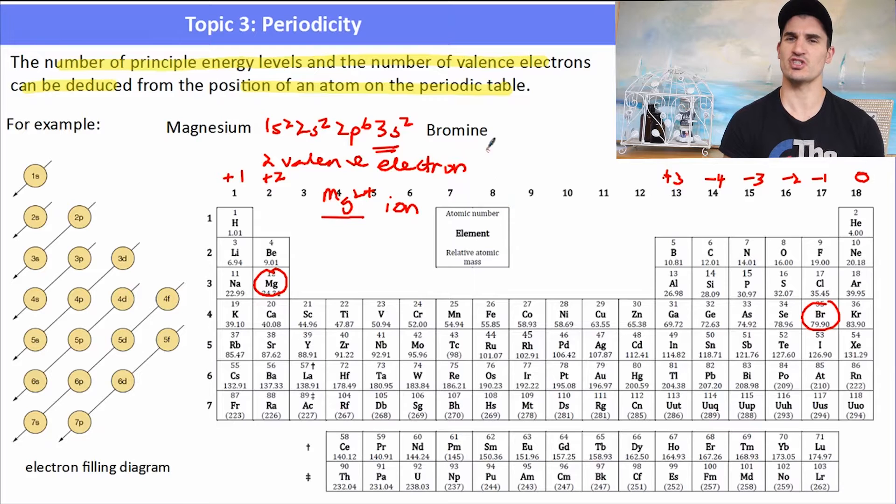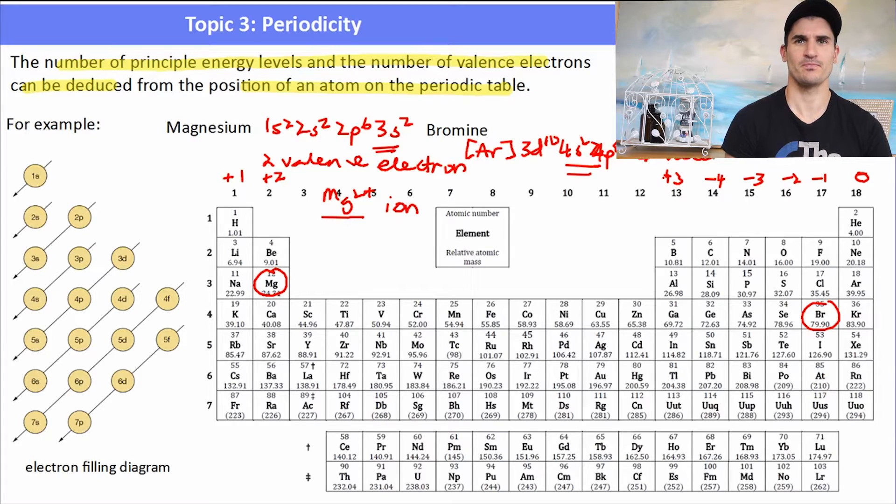Bromine, which is in group 17, would have the electron configuration - and I am going to do condensed for this - square brackets of argon, and then the rest would be 3d10, 4s2, and then 4p5. Remember that the 3d, because it is actually in the third shell, it gets placed before the 4s2 electrons. So 4p5, so that means that this element has 7 electrons in its outermost shell in the fourth shell, and the biggest energy level it holds is a 4p electron. So it has 7 valence electrons. 8 is a nice stable octet, so bromine would like to gain 1 electron to form a negatively charged ion.